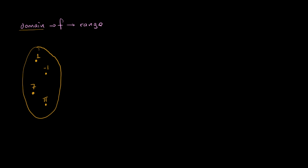And let's say that this right over here is the range. And so let's say that f of 1, if you input 1 into the function, the function maps 1 to the number negative 3. And let's say it maps the number negative 1, so f of negative 1 is equal to 7. And let's say that f of 7 is equal to 10. But let's say that f of pi is also equal to 10.